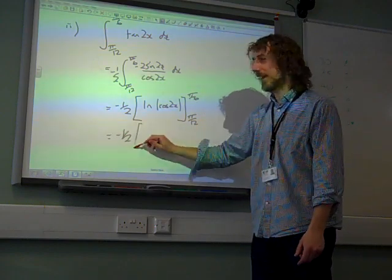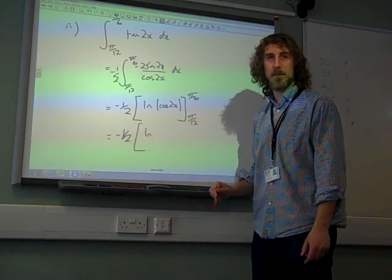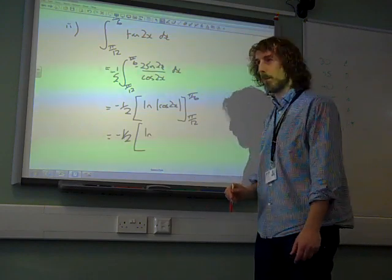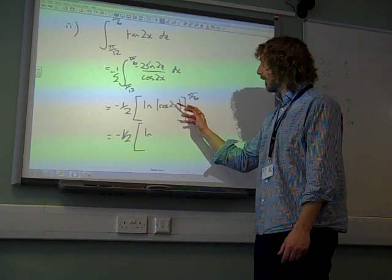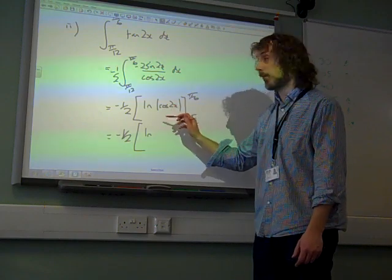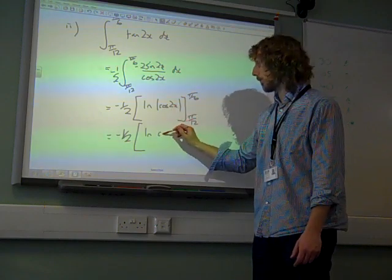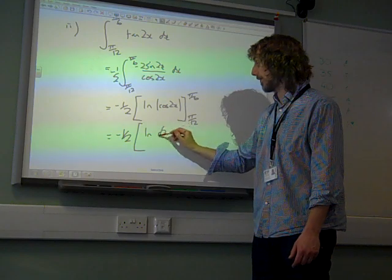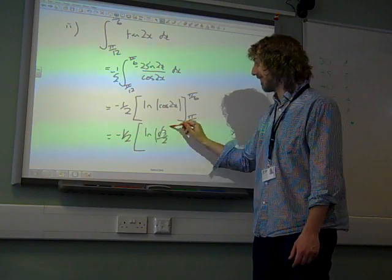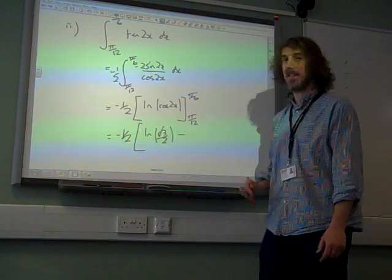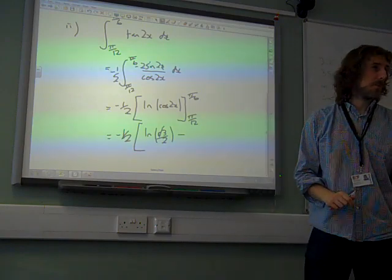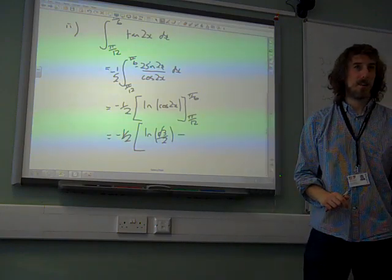Play the limits and we get natural log of some stuff. Cos of things. I don't even know. Cos of pi by 3 is root 3 over 2. Cos of pi by 3 is root 3 over 2. Minus cos of pi by 6 is...